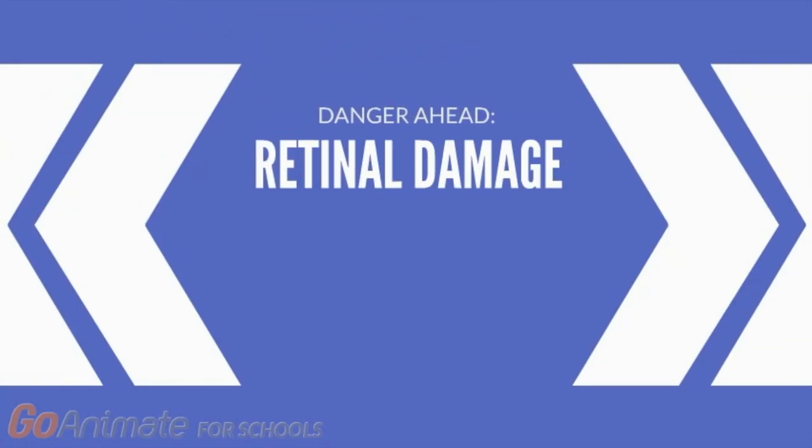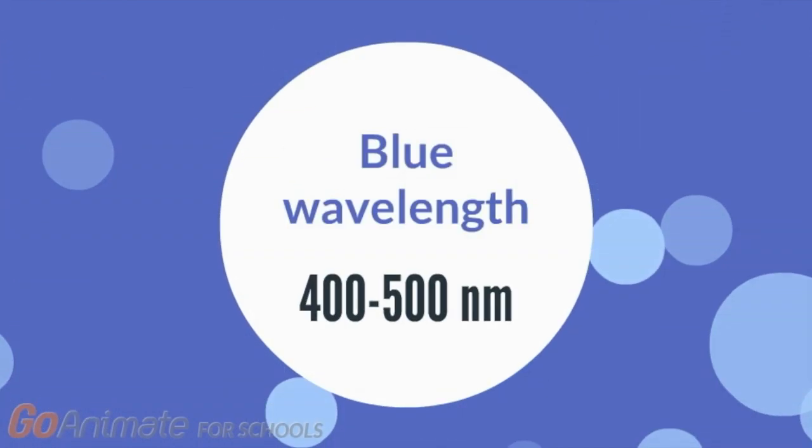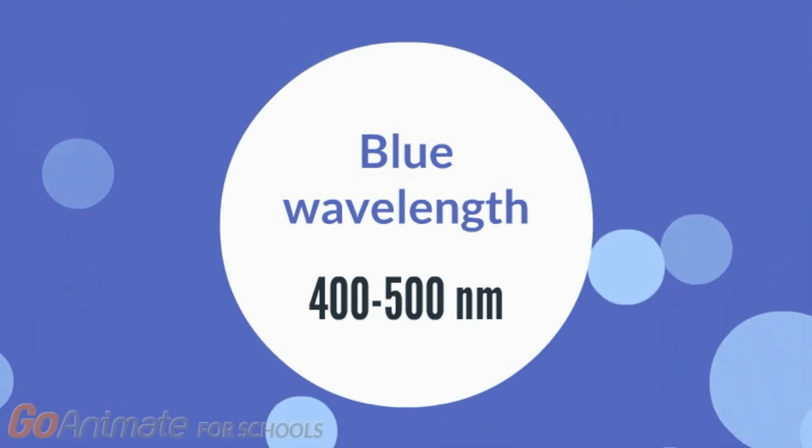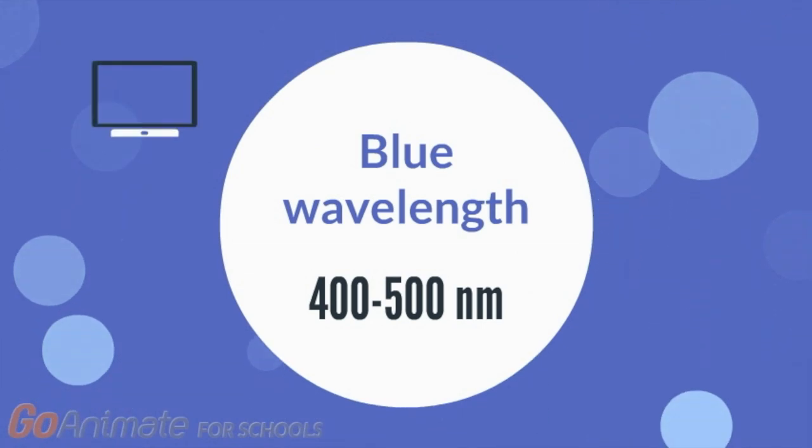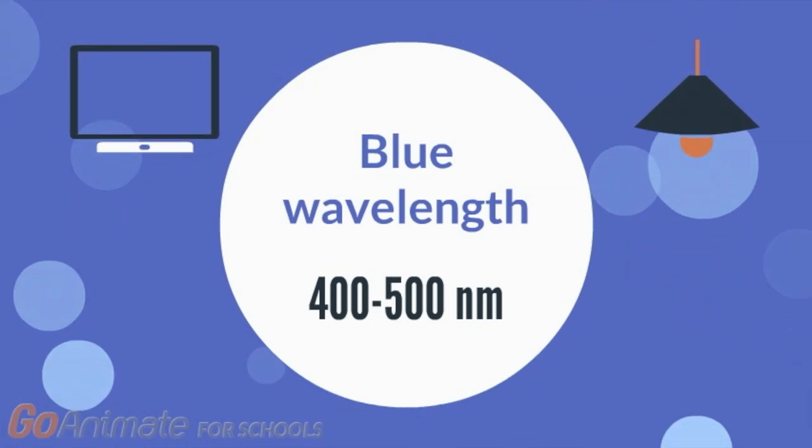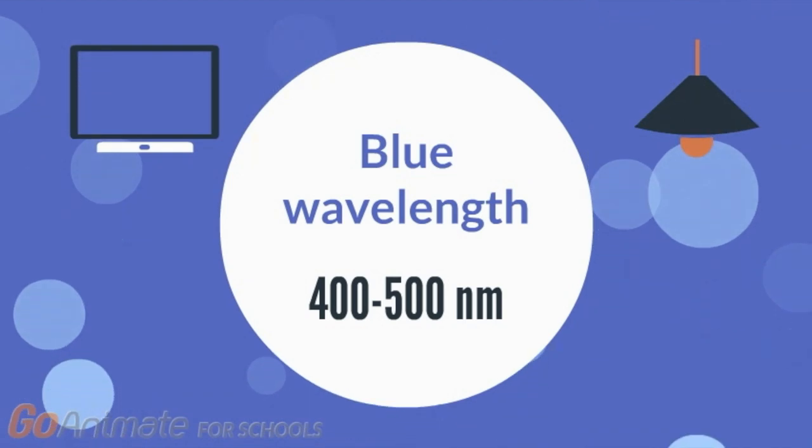Light causes damage to the retina and decreases photoreceptor responses to light. The most harmful component of visible light is the blue wavelength, which ranges from 400 to 500 nanometers. Our eyes are exposed for a very long time to high levels of blue light on a daily basis. This includes screens, artificial LEDs, neons, etc. So it is important to find ways to reduce their detrimental impact on the eyes.